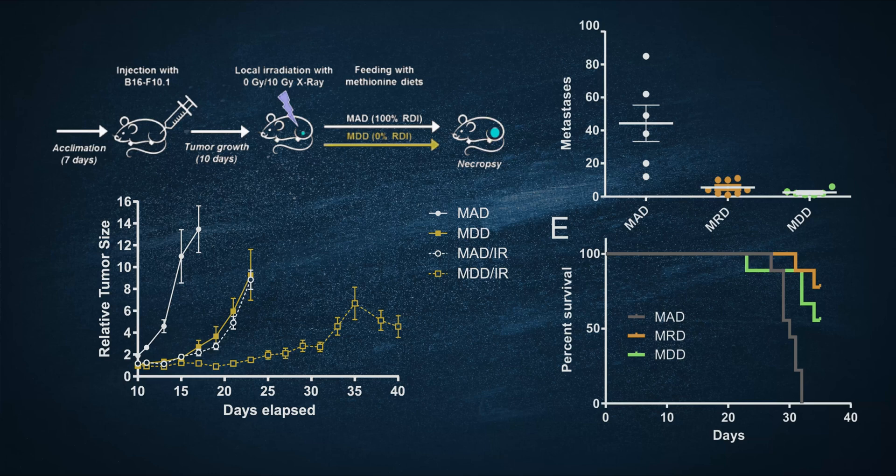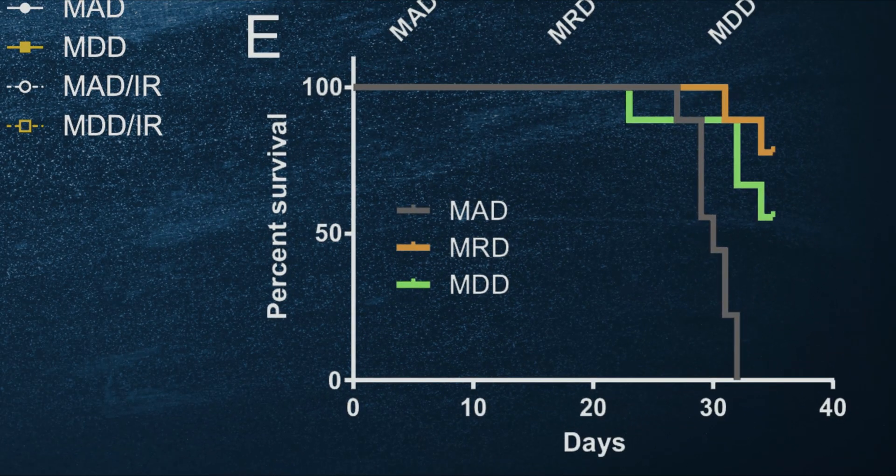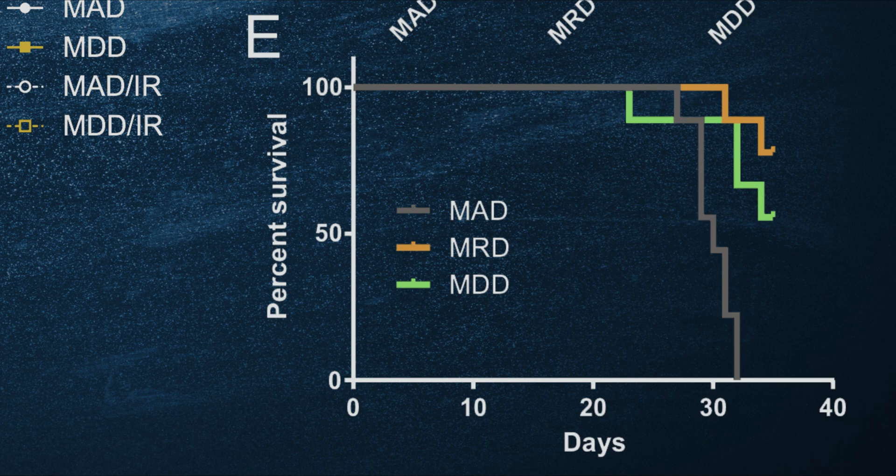And here were their findings, clear as day. The less methionine the mice consumed, the fewer metastases that they developed, the longer that they survived, and the smaller their tumors were in size.